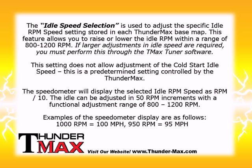This is a predetermined setting controlled by the Thundermax. The speedometer will display the selected idle RPM speed as revolutions per minute divided by 10. The idle can be adjusted in 50 RPM increments with a functional adjustment range of 800 to 1200. Examples of the speedometer display are as follows: 1000 RPM equals 100 mph and 950 RPM equals 95 mph.